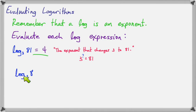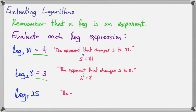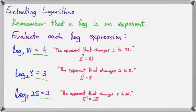Here's another one: log base 2 of 8. In other words, the exponent that changes 2 into 8. In exponent form, 2 to some power equals 8. That power must be 3, so this log is 3. And again, log base 5 of 25 is the exponent that changes 5 into 25. In exponential form, 5 to some power equals 25, that missing power must be 2. So log base 5 of 25 is 2.